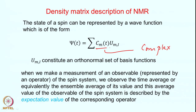What does orthonormal mean? For the alpha-alpha state, ⟨alpha|alpha⟩ = 1, while ⟨alpha|beta⟩ = 0. Likewise, ⟨beta|alpha⟩ = 0 and ⟨beta|beta⟩ = 1. This applies to all states in the spin system. For the two-spin system, all four states are orthogonal to each other and normalized — each diagonal matrix element equals 1.